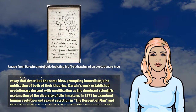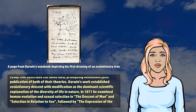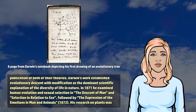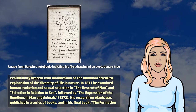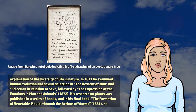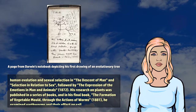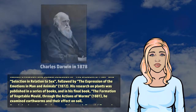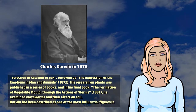Darwin's work established evolutionary descent with modification as the dominant scientific explanation of the diversity of life in nature. In 1871 he examined human evolution and sexual selection in The Descent of Man and Selection in Relation to Sex, followed by The Expression of the Emotions in Man and Animals.